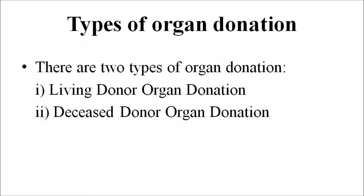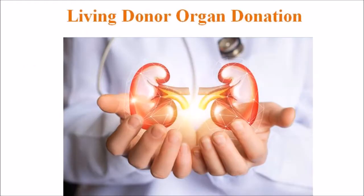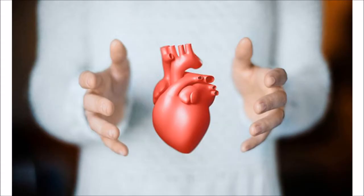There are two different types of organ donation. The first one is living donor organ donation, and the second one is deceased donor organ donation. When it comes to living donor organ donation, a person during his lifetime can donate one kidney, a portion of pancreas and a portion of liver to a genuinely physically ill patient. The living donor is any person not less than 18 years of age who voluntarily authorizes the removal of any of his organs or tissues during his lifetime, as per prevalent medical practices for therapeutic purposes.